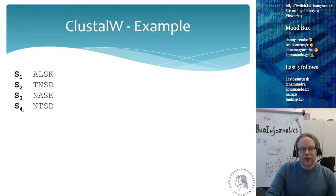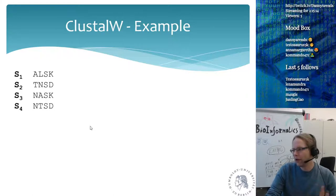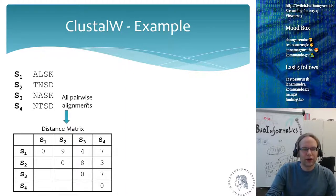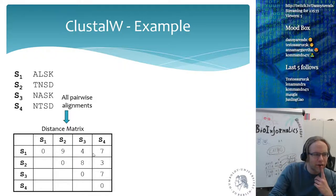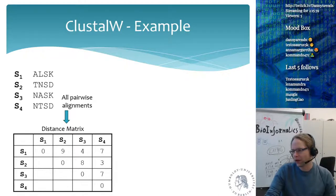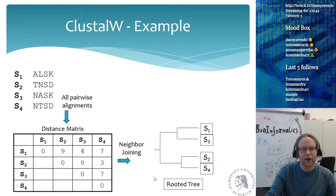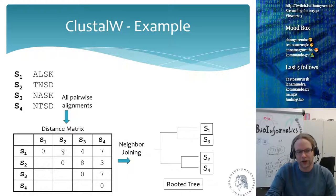Here's an example. Imagine these are four sequences — just letters, not proteins. First we do the pairwise alignment: sequence one versus sequence two, sequence one versus sequence three, and so on, creating the matrix of pairwise alignments. From this we build a neighbor joining tree, which shows that sequence one and sequence three are most similar.